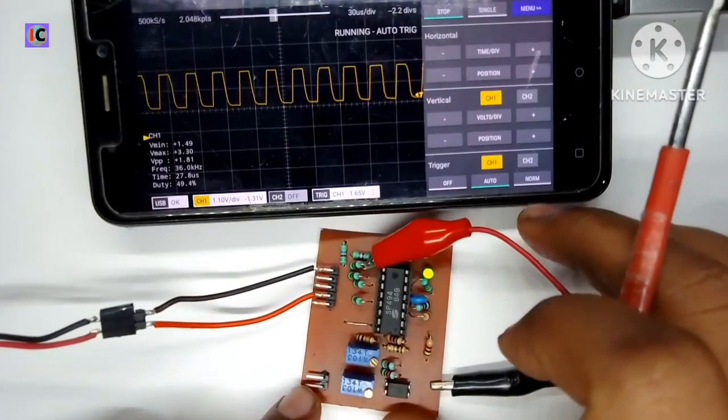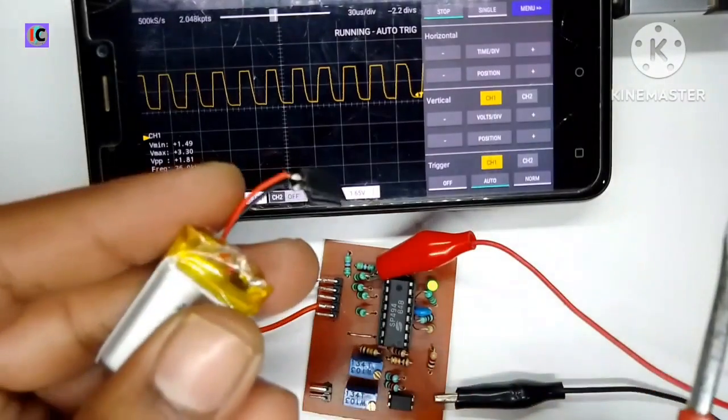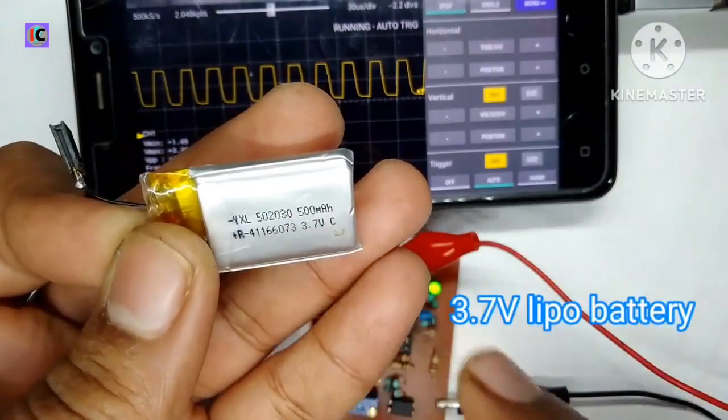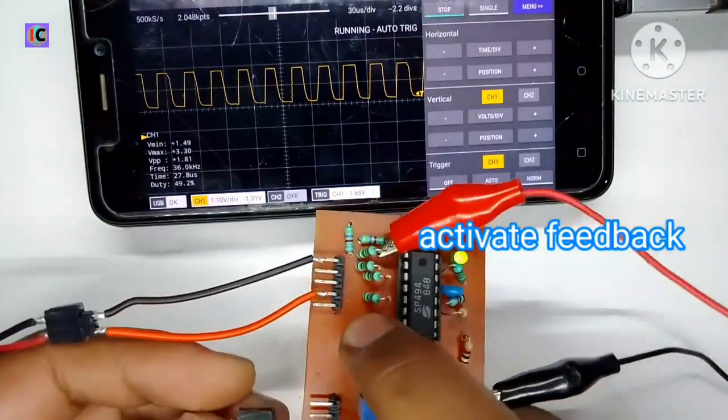For the feedback loop testing, I am using a 3.7-volt battery as a voltage feedback so that we can adjust the output voltage using a voltage control potentiometer.